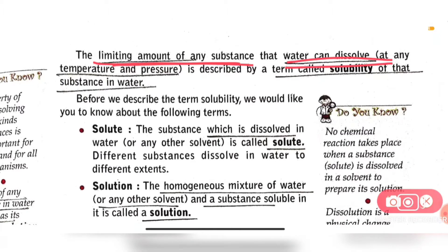When water dissolves any substance, it forms a solution. The solution has two parts. One is solute — the substance which is dissolved in water or any other solvent. Several substances can make a solution. Basically, the substance which dissolves in water or any other solvent is called the solute.